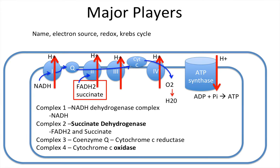Let's talk about the enzymes in the electron transport chain and what you need to know about them. There are four major complexes: complex 1, 2, 3, and 4. Complex 1 is called the NADH dehydrogenase complex, and its electron source is NADH.